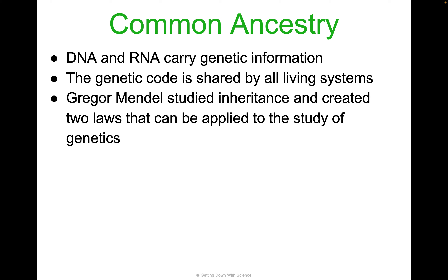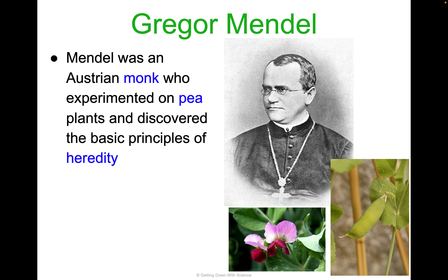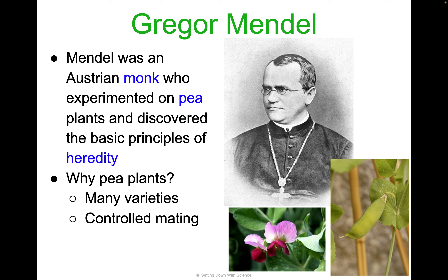To understand why your pet is a pet and you are a human, we have to study what Gregor Mendel did, which was peas. He was an Austrian monk who experimented on pea plants and discovered the basic principles of heredity — how traits are passed down from one generation to the next. He used pea plants because they have many varieties, you can control mating, and they have a relatively short generation time.